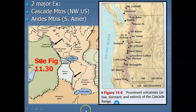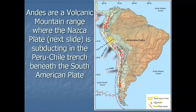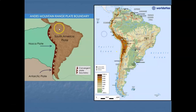Another excellent example of subduction zone volcanoes are the Andes Mountains — one of the tallest and longest mountain ranges on earth, located all along the west side of South America. Here the Nazca plate is subducting beneath the continental portion of the South American plate, creating a whole series of volcanic mountain peaks along the west coast of South America. Little triangles on the map mark all the individual volcanoes.